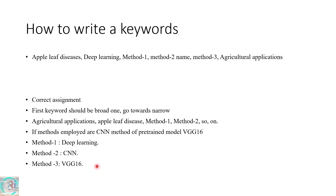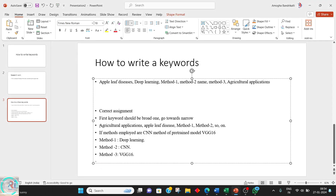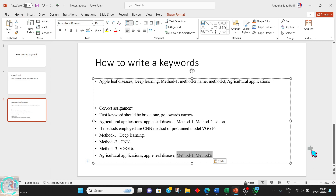This is the way to write keywords. After apple leaf, you go to deep learning, then CNN, then VGG16. This is the method you need to follow to write keywords for your papers. This will in turn help you attract more authors to read your paper, which is going to enhance your citation count. This is the standard procedure to be followed in order to write keywords.